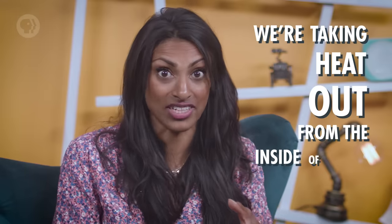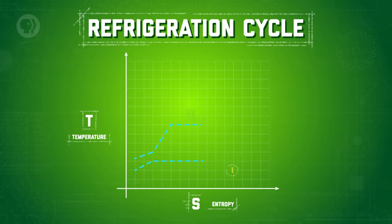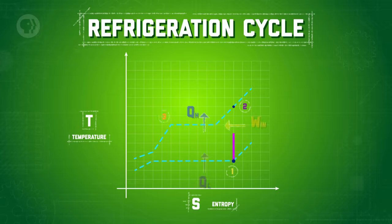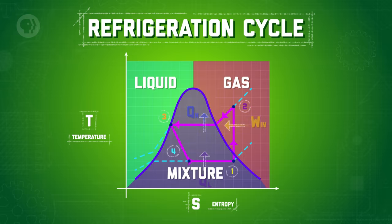So basically, the food inside your fridge stays cold because we're taking heat out from the inside of your fridge. We can see this more clearly if we take another look at a phase diagram, this time for a refrigeration cycle. While similar to the phase diagram for the heat engine, we'll see a few differences — the fluid spends more time in a gaseous state and less time as a liquid than it did for the heat engine.